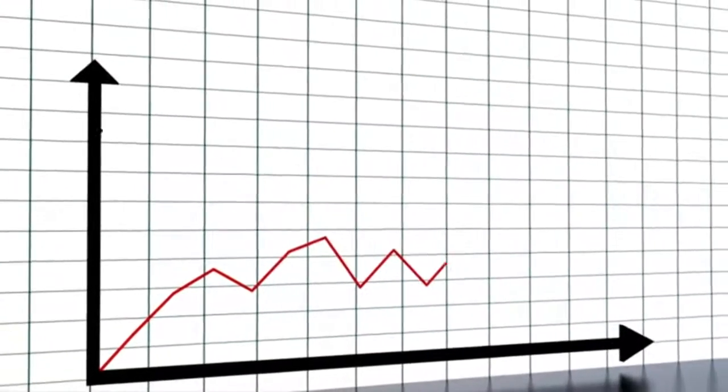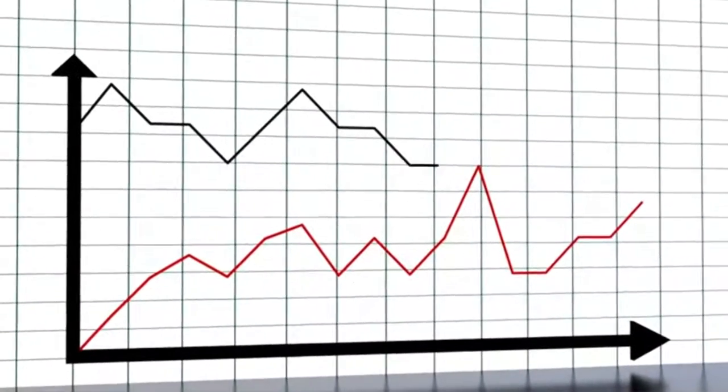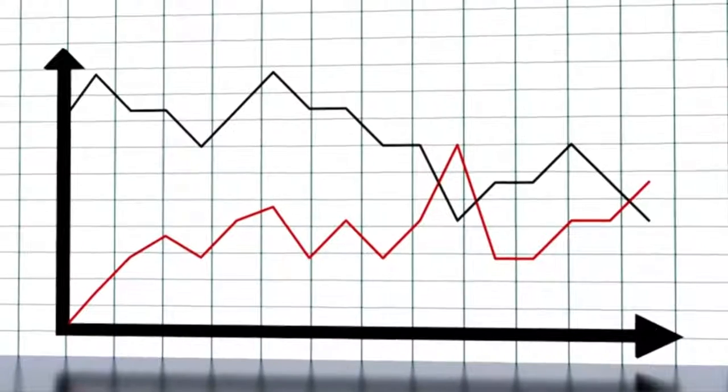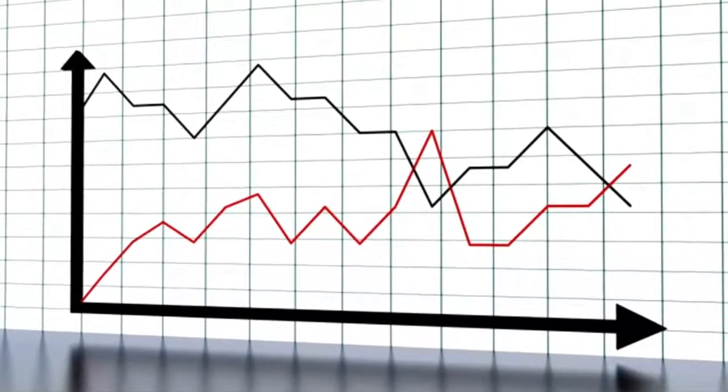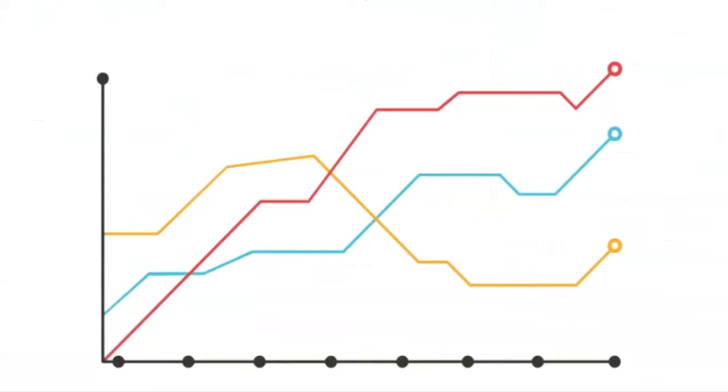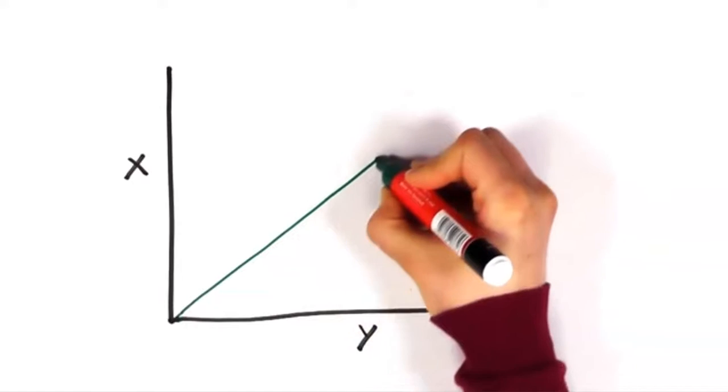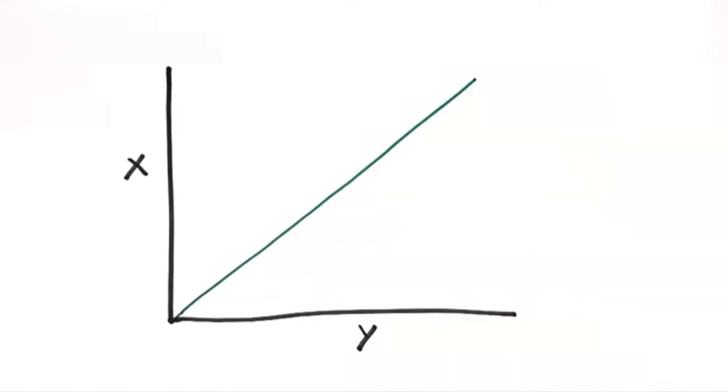This line graph has got two lines that go up and down. Look, this line graph has got four lines that go up and down. The line on this line graph only goes up.